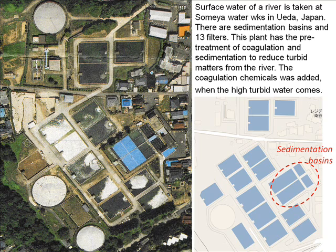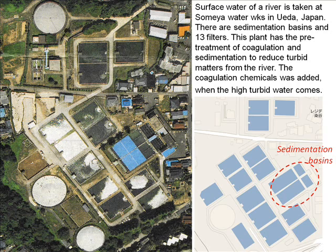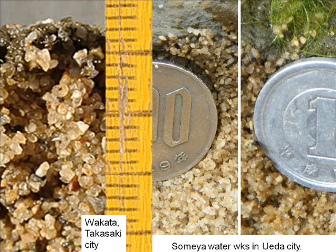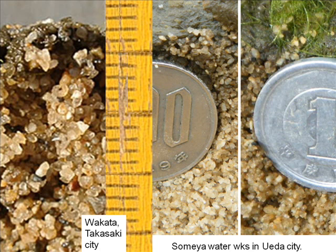Surface water of a river is taken at the Ueda Water Works in Ueda, Japan. There are sedimentation basins and 13 filters. This plant has pretreatment of coagulation and sedimentation to reduce turbid matter from the river. Coagulation chemicals are added when high turbidity water comes. In Ueda City, small size sand is used — this is the normal standard size. I checked the profile of the sand column near the surface. Dirty matter does not enter the deeper layer in both plants. Wakata sand is larger than Ueda sand. In Ueda City, the sand may be darkened a little. They sometimes use coagulant. I feel there is a slight effect of chemicals on the biological community in Ueda City.